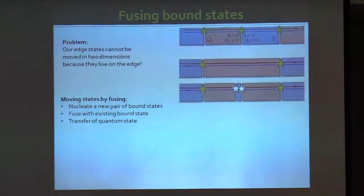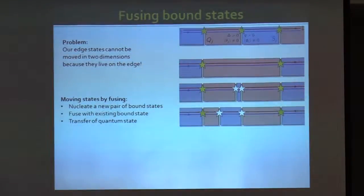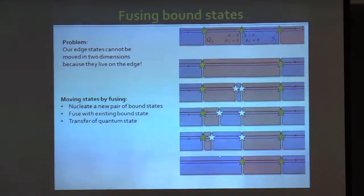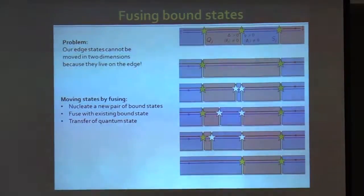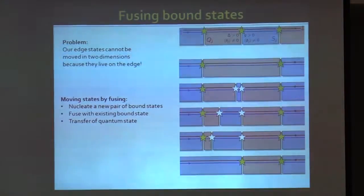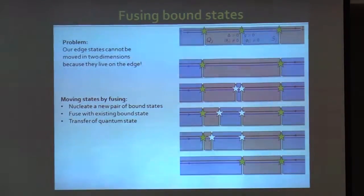For Rashba wires, we don't go as far as claiming braiding because the RG calculation shows that a finite-length wire always has corrections exponentially suppressed in the length but finite for finite systems, so topological protection is imperfect. Nevertheless, one can observe an 8-pi periodic Josephson effect, related to the quantized charge of e/2 carried by these bound states. So a Rashba wire placed on superconductors with a phase difference should, due to the appearance of these parafermionic bound states, exhibit an 8-pi periodic Josephson effect.